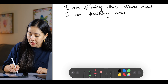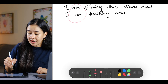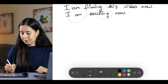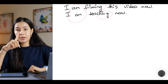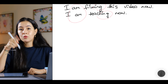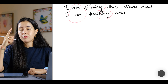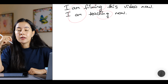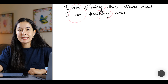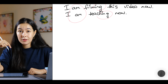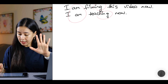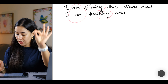Here are the important things. Remember: I am filming — 'am' plus the verb with I-N-G. I am filming. I am teaching. You are watching me. You are listening to me. This is the continuous tense.